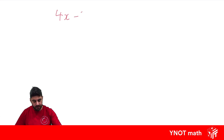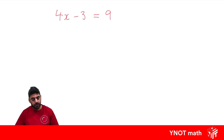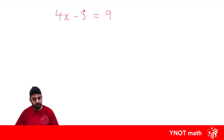We have 4x minus 3 equals 9. Remember, the goal in solving an equation is to solve for the pronumeral and get it on its own. Our pronumeral is x, but it's not on its own because it's got a 4 and a minus 3. We need to get rid of both of these things. As a general rule, if you've got a number by itself, that's the thing we get rid of first.